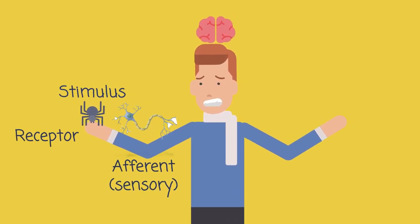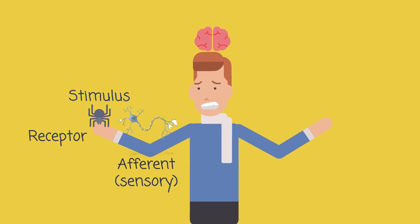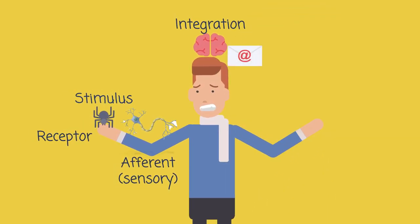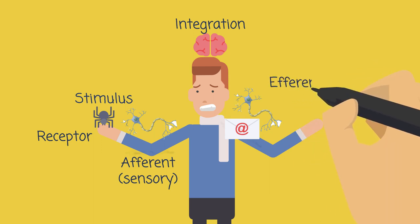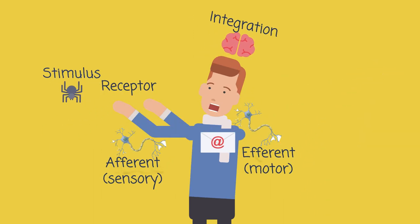This message will reach your brain, and your brain does the integration, prepares a message, and sends it to your muscles through efferent or motor neurons. Efferent means away from. The muscles receive the message and do the proper response.